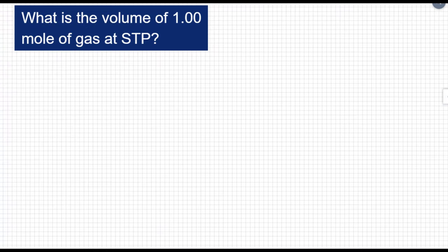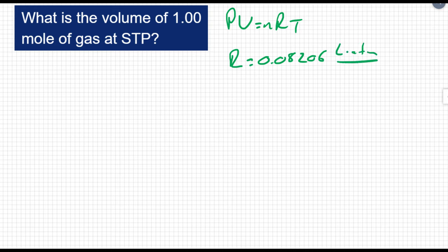So we're going to say PV equals nRT, R equals 0.08206 liters times atmospheres divided by moles times Kelvin.